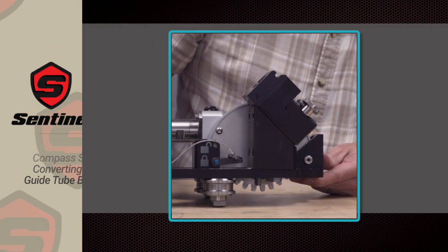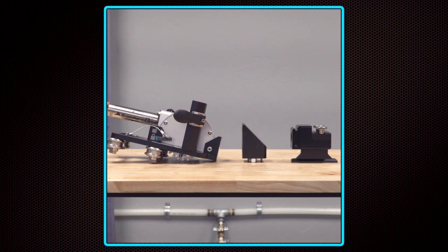Converting the Guide Tube Block. Before installing the linear drive carriage, you need to change the setup of the guide tube block so that the 1L tractor is positioned at an angle for confined space cleaning.